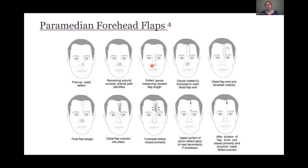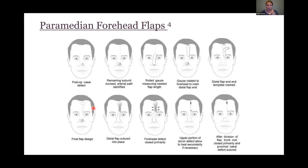Once you get the correct gauze length, you rotate the gauze on the pedicle to determine how far you have to go up the forehead for this tissue flap, then outline your flap. The distal portion of the flap changes depending on what kind of defect you're trying to cover, whether it's on the nasal tip or the nasal ala. I didn't really focus on the distal part of the flap for my project—I just want to point it out because this flap looks different than the flaps I'll be showing on my cadavers.